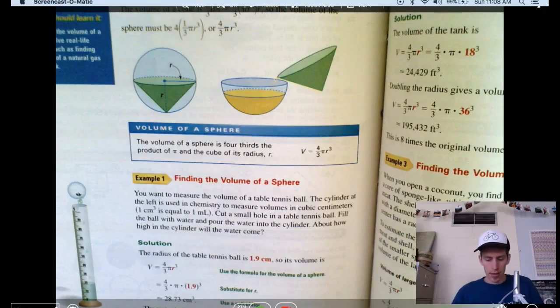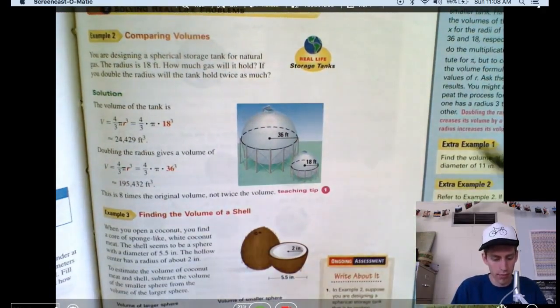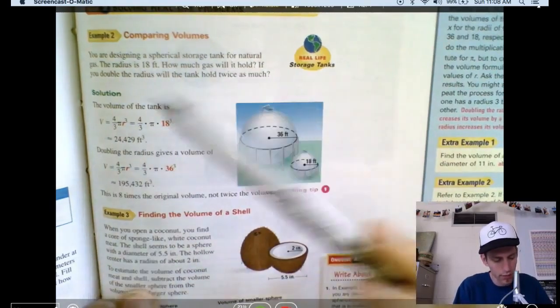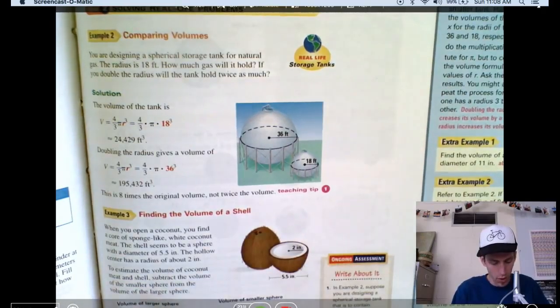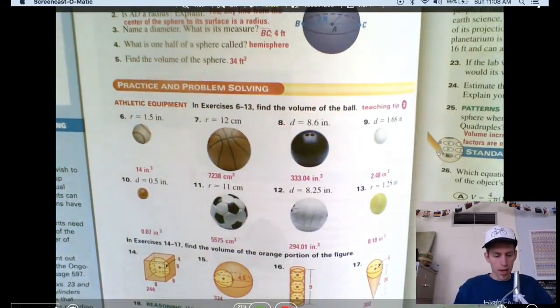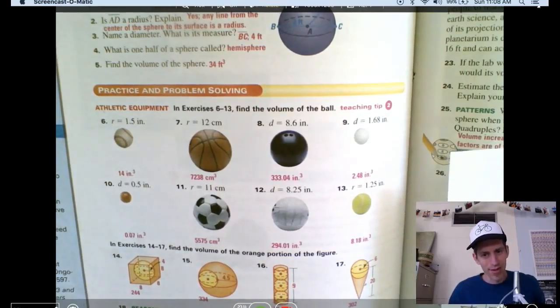Now, you can figure out the volume of this guy. What is this? Spherical storage tank for natural gas. Oh, interesting. You can find the volume of a coconut there. You can find the volume of a lot of stuff, right? Now, the thing is, what if they give you the volume and you have to figure out the radius?